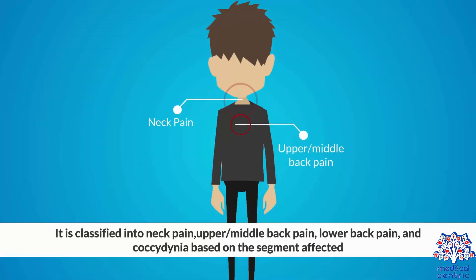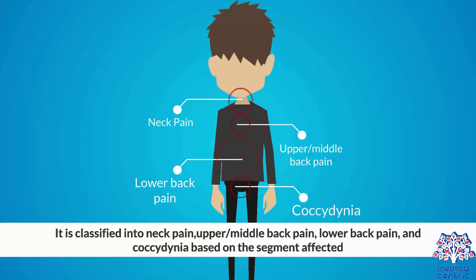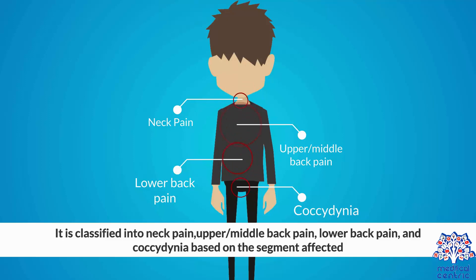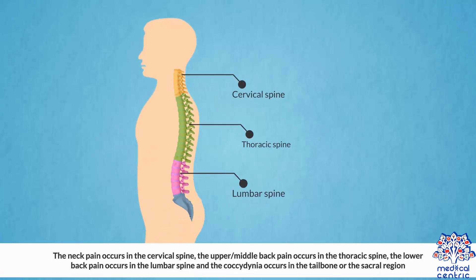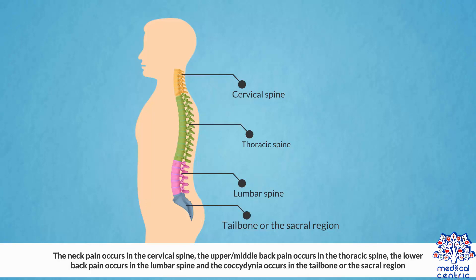It is classified into neck pain, upper-middle back pain, lower back pain, and coccydynia, based on the segment affected. The neck pain occurs in the cervical spine. The upper-middle back pain occurs in the thoracic spine, the lower back pain occurs in the lumbar spine, and the coccydynia occurs in the tailbone, or the sacral region.